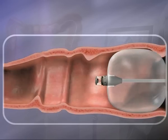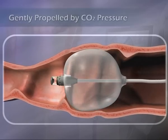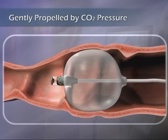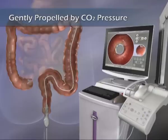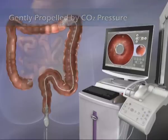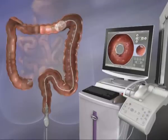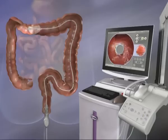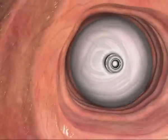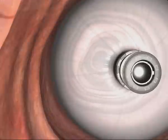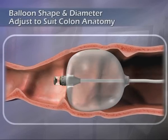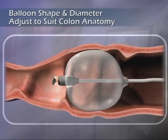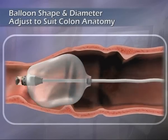A computer algorithm adjusts pressure behind the scanner balloon, gently propelling it forward. A system of sensors constantly monitors pressure within and behind the balloon. As the balloon travels through the colon, its diameter and shape are constantly adjusted to suit changing colon anatomy.